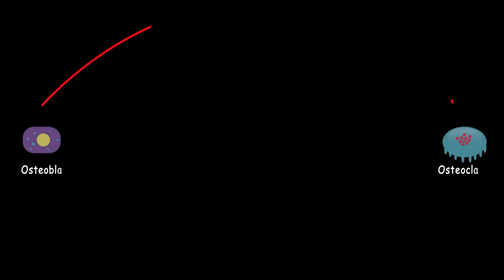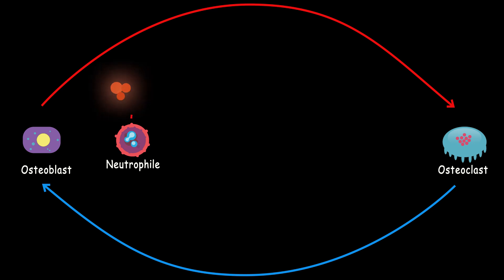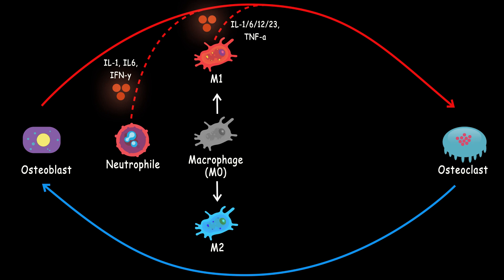Besides all of these factors, immune cells play a really important role. For example, neutrophils, which are the first line of defense, can increase the population of osteoclasts by releasing certain factors. Macrophages can be polarized into two types: M1 and M2 macrophages. The M1 macrophages increase the inflammation and the osteoclast population by releasing these factors. However, M2 macrophages release immunomodulatory cytokines such as growth factors and interleukin-10 that increase the osteoblast population.